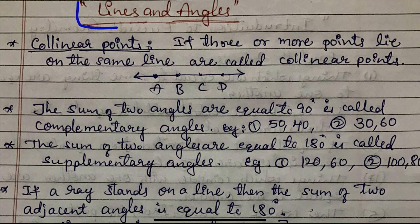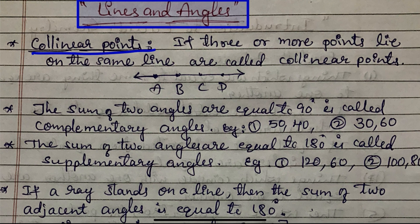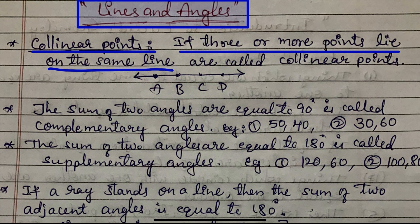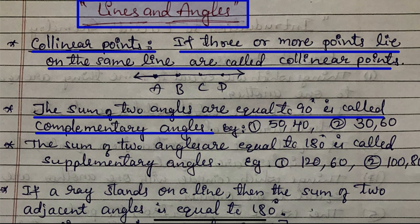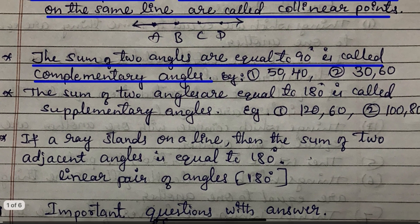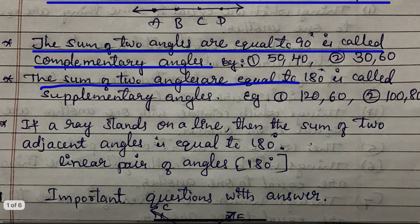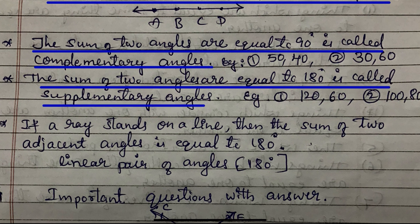In the last class we covered definitions of lines and angles. Collinear points: three or more points lying on the same line are called collinear points. The sum of two angles equal to 90 degrees is called complementary angles. The sum of two angles equal to 180 degrees is called supplementary angles.